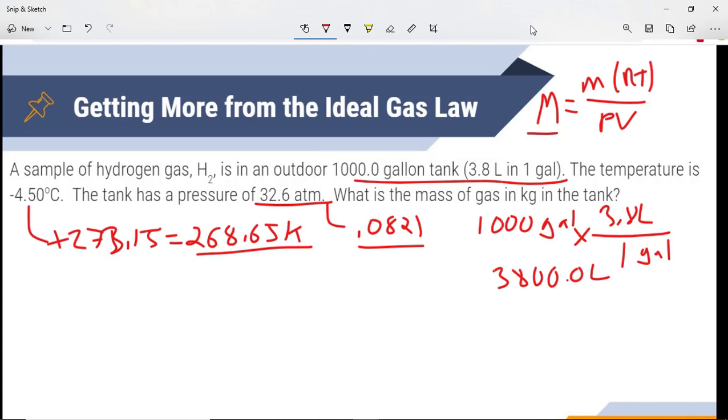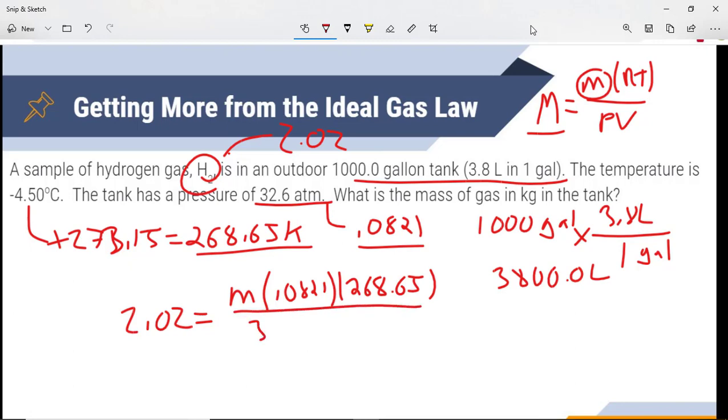So now we're just going to plug into the formula up above and solve. Before then, though, we need to know our molar mass, so we can solve for M, our mass. We have hydrogen gas here. And looking at the periodic table, the molar mass is 2.02. So we just plug these numbers in and solve. So we're going to start with 2.02 equals our mass, remember that is in grams, times R, 0.0821, times T, 268.65. We're going to divide that by our pressure and our volume.